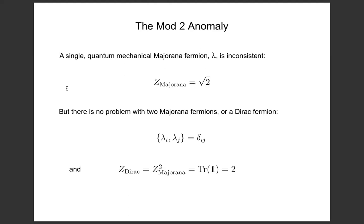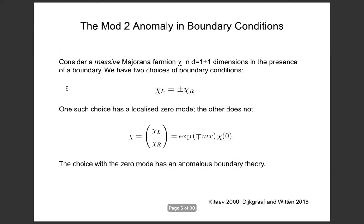This same mod-2 anomaly — mod-2 because odd numbers of Majorana fermions don't make sense but even numbers do — also rears its head if you think about fermions on a line with a boundary. The simplest thing to do is to start with a Majorana fermion in one plus one dimensions, give it a mass, and then put it on a manifold with a boundary. You have two possible choices for boundary conditions: the left-moving fermion turns into a right-moving fermion with either a plus or a minus sign.